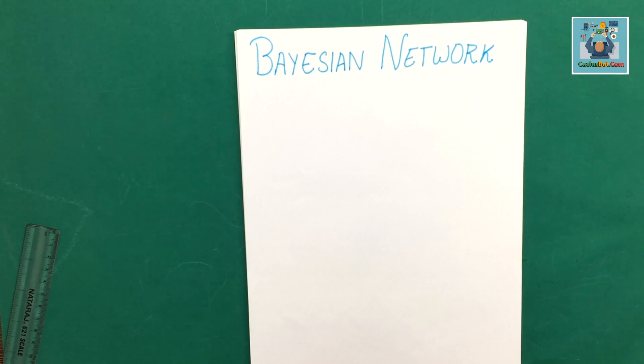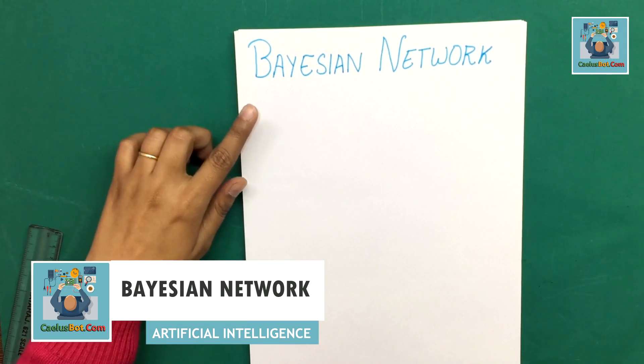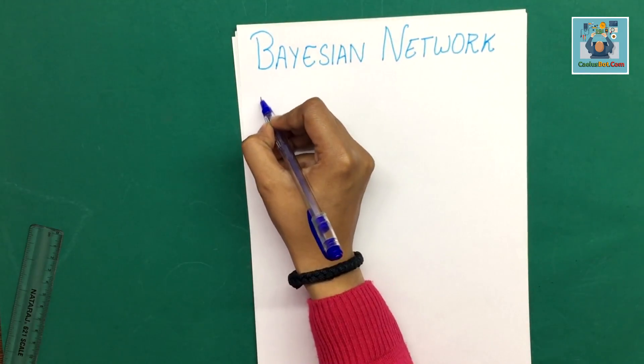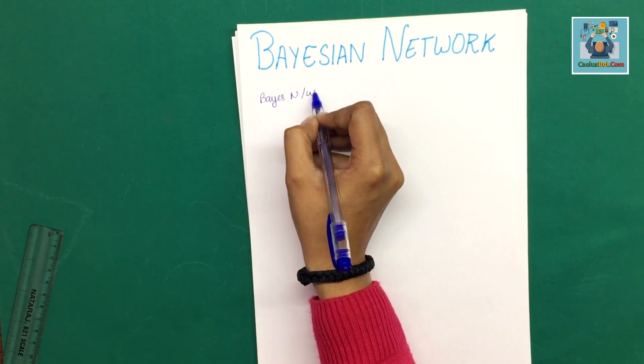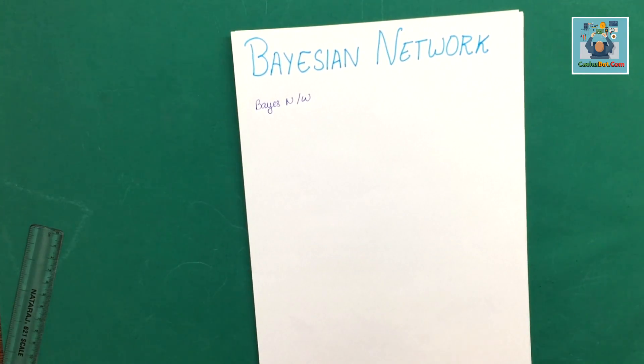Hello everyone, this is Aishwarya Kaushik. So today we are going to start with a new topic that is Bayesian Network. Bayesian Network is also called Base Network or Belief Network.